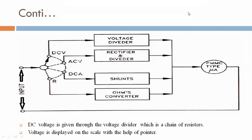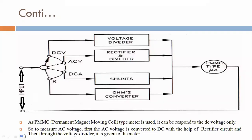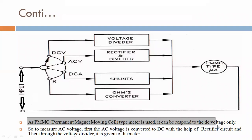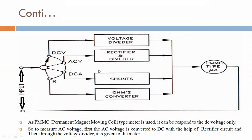Since the Permanent Magnet Moving Coil (PMMC) type meter is used, it can only respond to DC voltage. This is a limitation of the PMMC meter — it will only work on DC voltage. So the question is: how can we measure AC voltage?